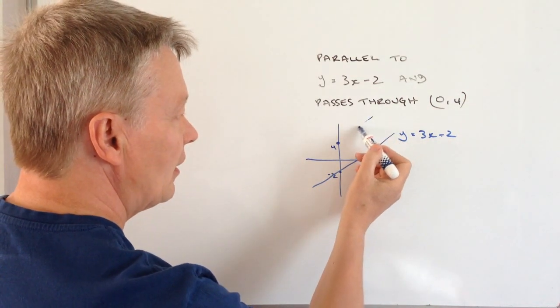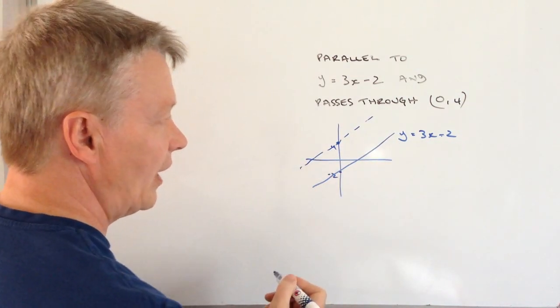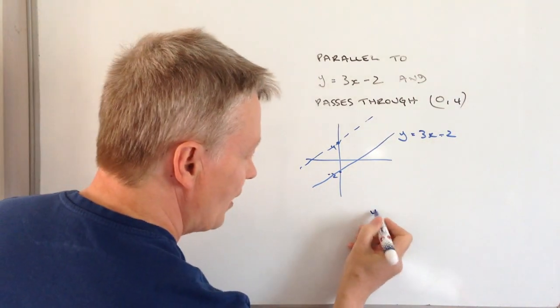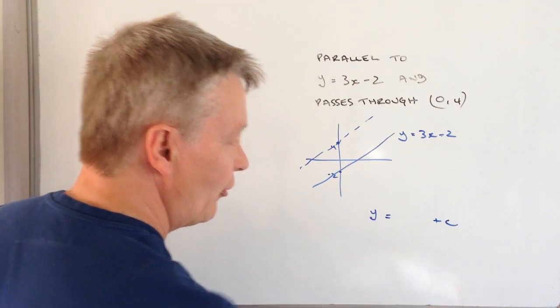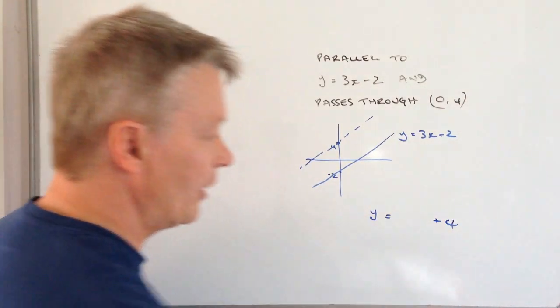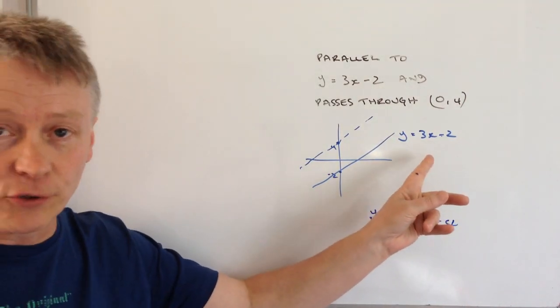In fact, it's actually going to look like that. So the first thing is I can write y equals... plus 4. Now what I also need to do is work out the gradient.